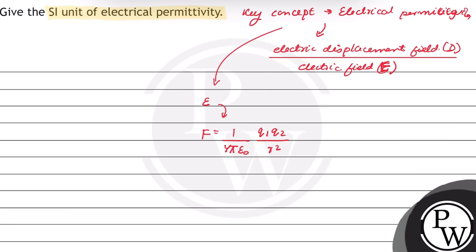We know that the SI unit of force is Newton and charge is coulomb. So from the formula, we have epsilon naught in terms of coulomb squared over meter squared.